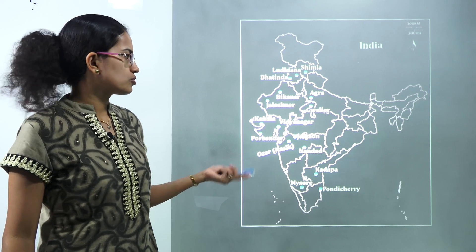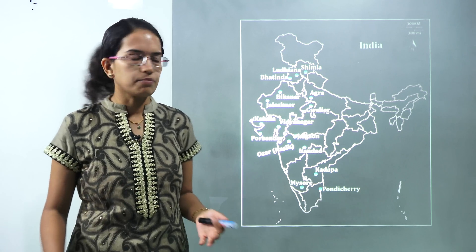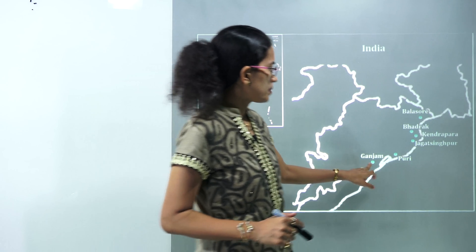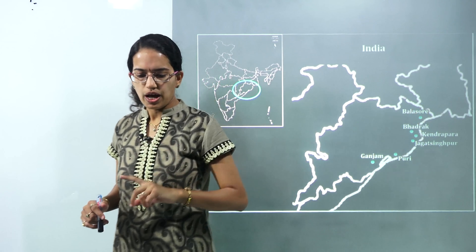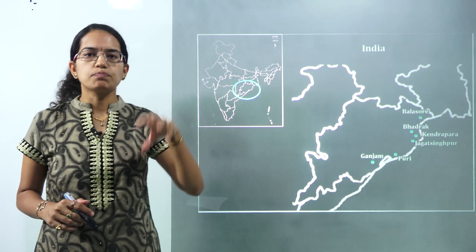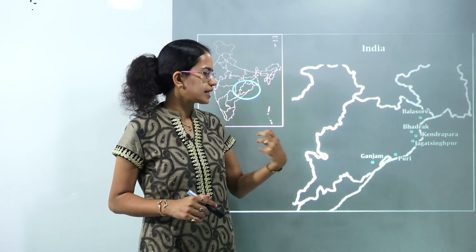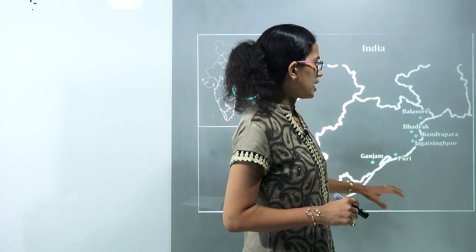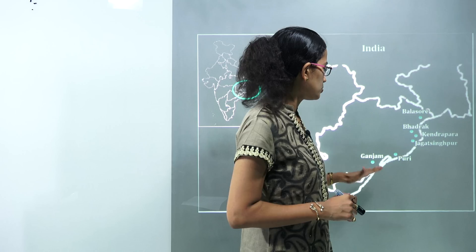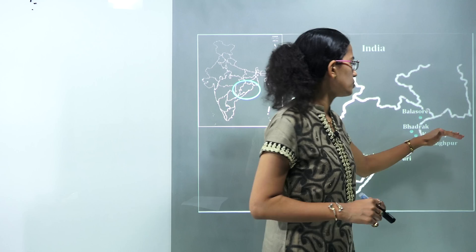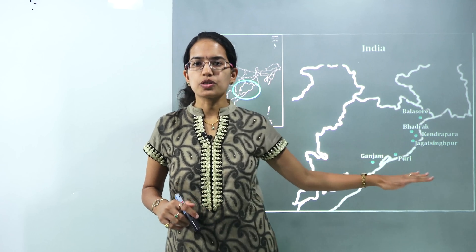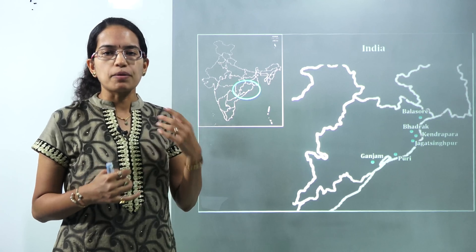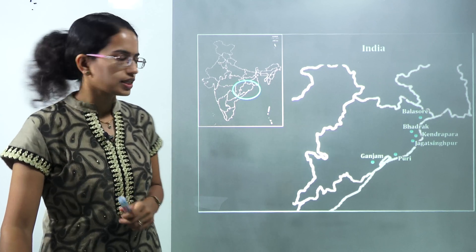The Udan scheme stands for Udedesh ka Aam Nagrik. Next, we talk about major locations in Odisha. The first public automatic natural calamity alert system has come up on the coastline of Odisha. The important areas it covers include Ganjam, Puri, Bhadrak, Balasore, Kendrapara, and Jagatsinghpur — the major locations under this first automatic public address system for natural calamity.